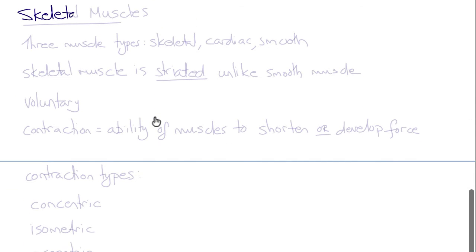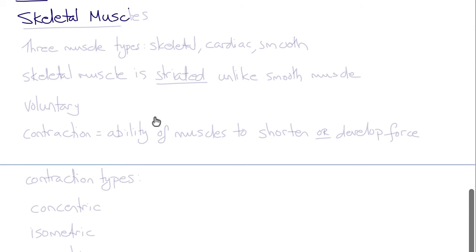Another important part of joint systems and joint mechanics are the skeletal muscles that generate the forces required to create moments about the joints. There are three types of muscles: skeletal, cardiac, and smooth.